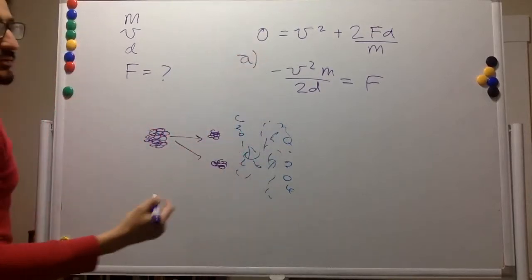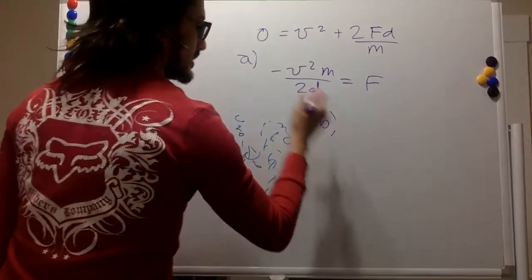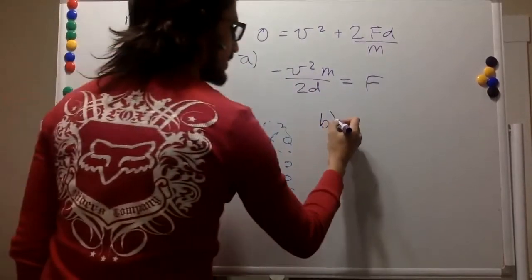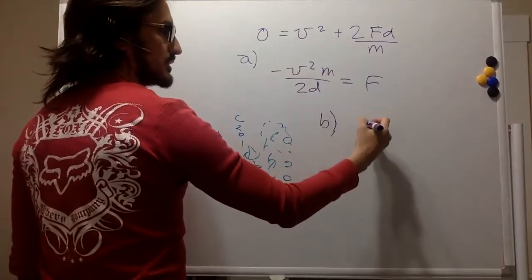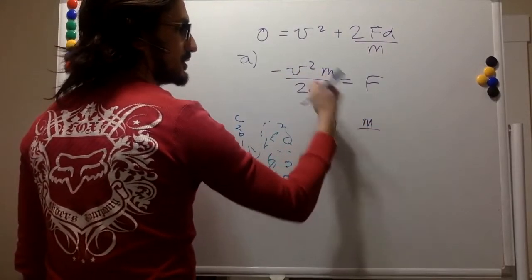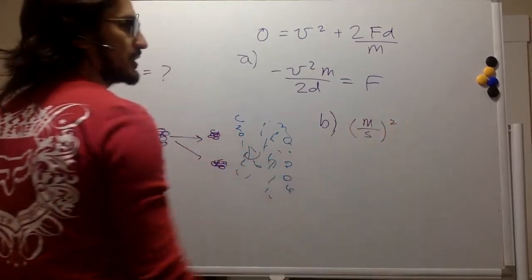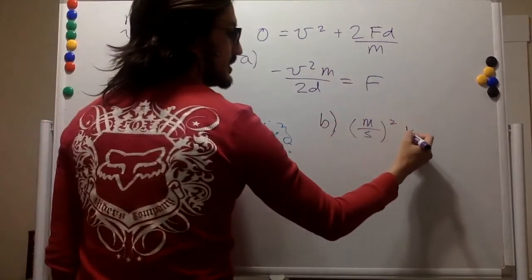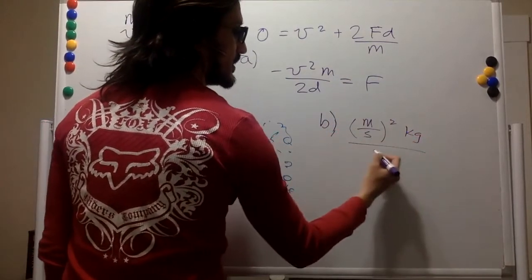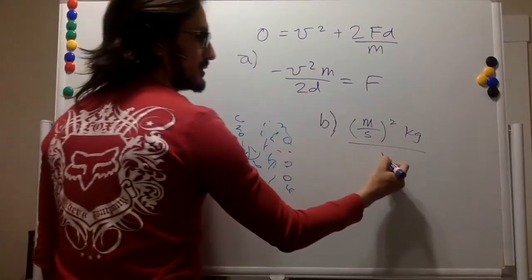So velocity squared is meter per second squared. The mass is in kilograms and the distance is in meters.